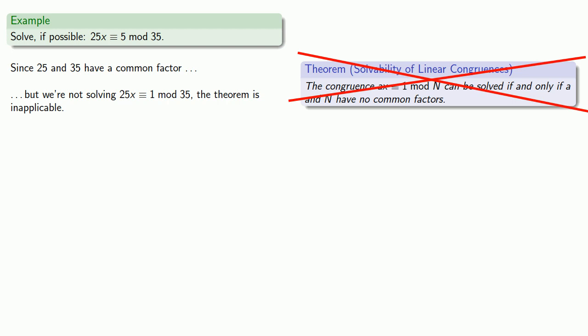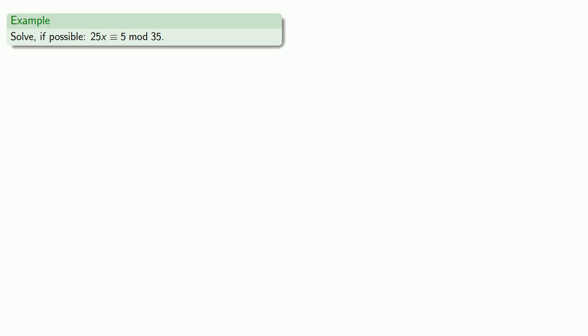And so we have to do something else to solve this congruence, or to determine whether this congruence is unsolvable. Well, let's think about this. If we had 25X equal to 5, we could divide both sides by 5 to get 5X equals 1.